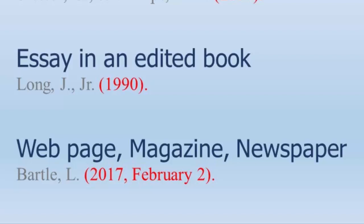If it is a monthly magazine, the month alone will suffice. Since web pages can be updated at any time, you will frequently need a complete date. The format for that is: parenthesis, year, comma, space, month spelled out and in title case, then the date, then close the parenthesis, and end with a period.